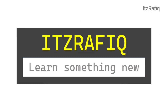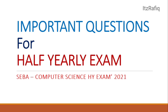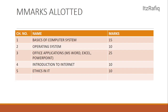Welcome! In today's video, I'm going to discuss some important questions of Class 9 Computer Science for the SEBA board. First, we will talk about what marks are allotted for the half-yearly examination. From Chapter 1 (Basics of Computer System), 15 marks are allotted; from Operating System, 10 marks; from Chapter 3 (Office Applications), the maximum of 25 marks; Chapter 4, 10 marks; and Chapter 5 (Ethics in IT), 10 marks.